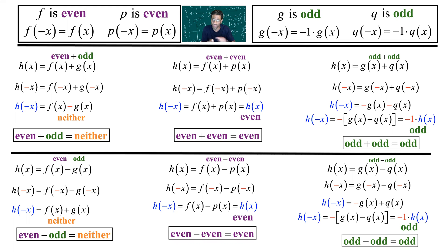When you mix the two — even and odd — you end up with neither. Now let's look at multiplication and division.